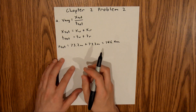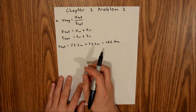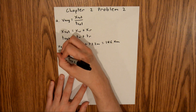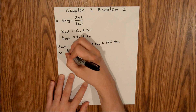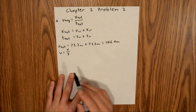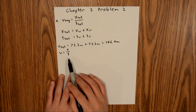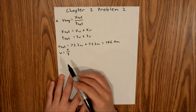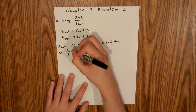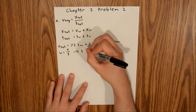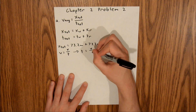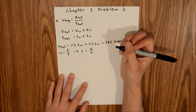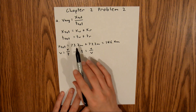In order to calculate our time, we know that velocity is equal to displacement over time. And so in order to isolate time, we can multiply both sides by time and divide both sides by velocity. And if we do that, we will be left with time is equal to displacement over velocity.